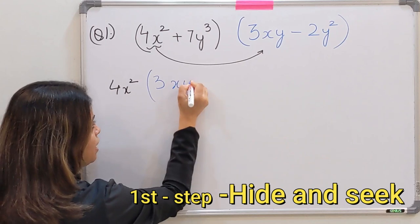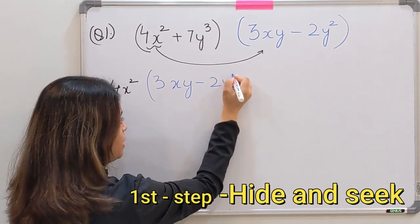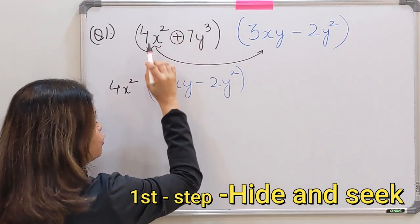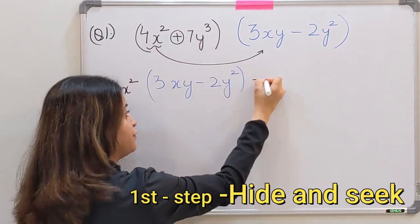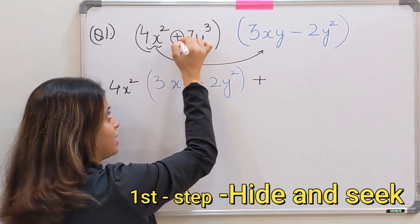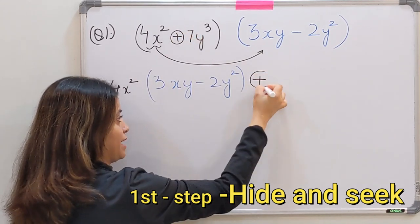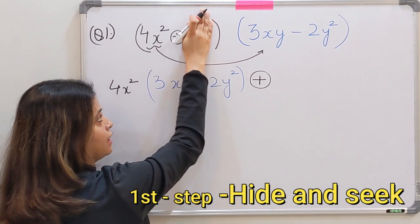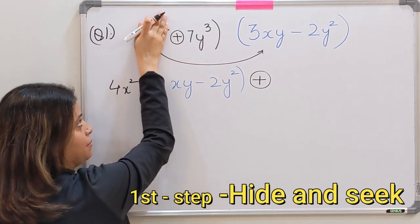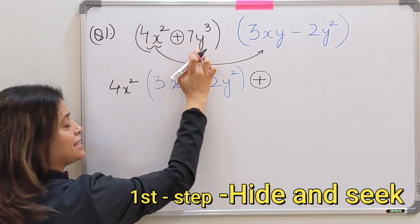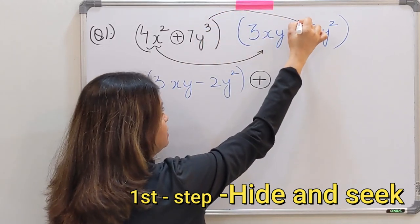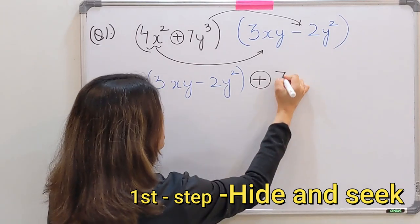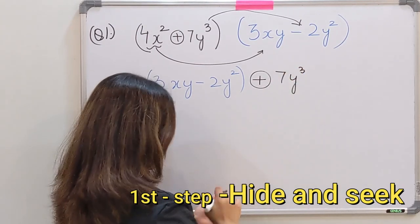So we will be multiplying 4x² with the complete binomial which is in blue color. So 4x² multiplied by the binomial 3xy minus 2y². This is done. Next, the plus sign that is written after 4x² will come here. Next we hide this one, we solved it. Now we hide the first term and the second will be multiplied using the hide and seek method as well.